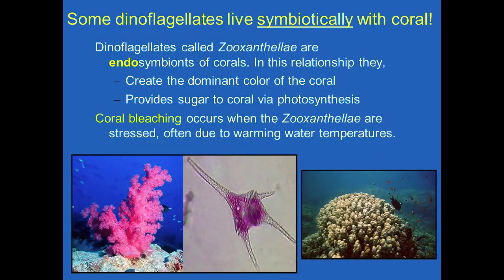Some dinoflagellates can live symbiotically with coral — these are called zooxanthellae, and they're endosymbionts of corals, kind of like midi-chlorians but for coral. In this relationship, they create the dominant color of the coral and provide sugar to the coral via photosynthesis, while the coral protects the dinoflagellate. Coral bleaching occurs when the zooxanthellae are stressed or dead, often due to warming water temperatures.